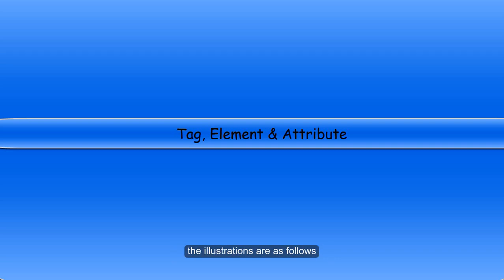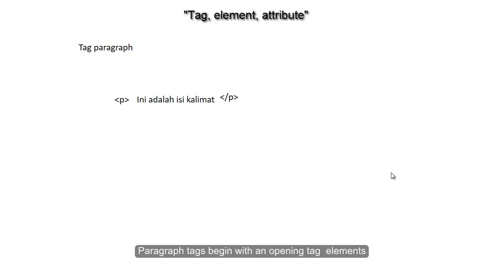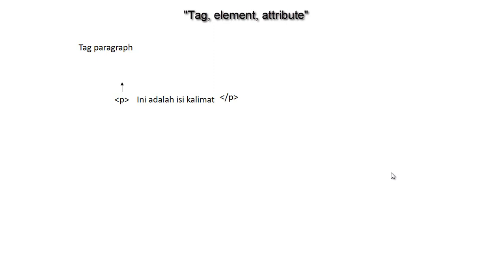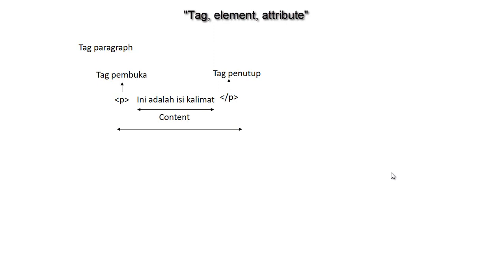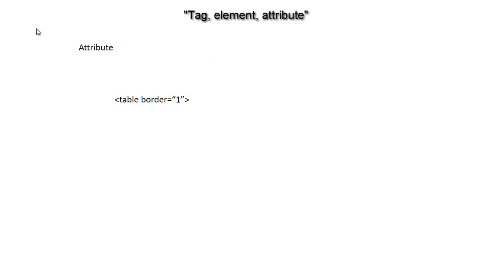The illustration is as follows. Paragraph tags begin with an opening tag and end with a closing tag. The content in between these is called an element. Additionally, tags can have attributes and attribute values.